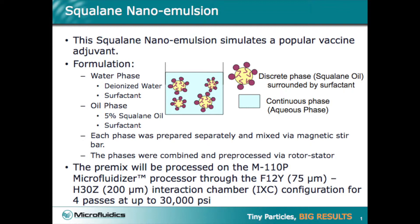Each phase will be prepared separately and combined into a premix via rotor stator. The premix will be processed on the M110P microfluidizer processor through the F12Y H30Z interaction chamber configuration at 30,000 psi for 4 passes.